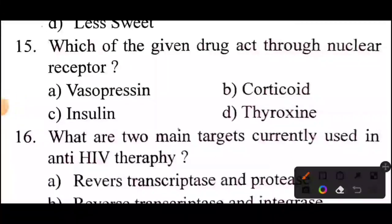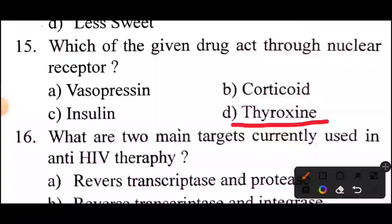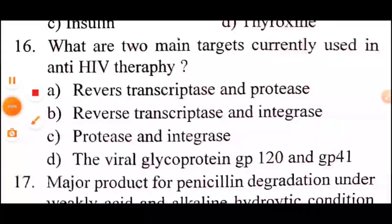Question 19: which of the given drugs acts through a nuclear receptor? Answer: option D, thyroxine.